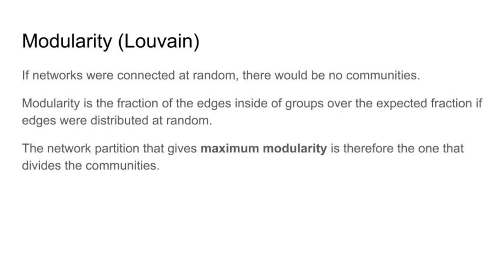Another way of separating communities is based on the concept of modularity. The intuition here is that the connections inside a community are not random — if the network were connected purely at random, there would be no communities. Modularity is a measure that compares the connections inside a community against the fraction you would expect if it were random. The algorithm then separates the network into communities in a way that maximizes this measure of modularity.